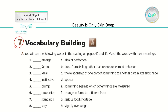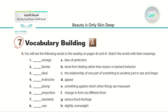We started with emerge — something that comes from nowhere into existence. Number two, famine — people dying from the shortage of food. Ideal — something perfect. Instinctive — something following the feeling, not the reason. Plump — chubby or stocky. Proportion — the suitability or fitness of something. Standards are the measures. And vary means changes from someone or something to another. The answers are shown on this slide.